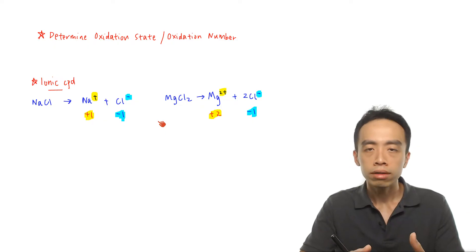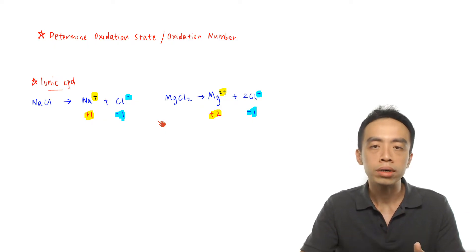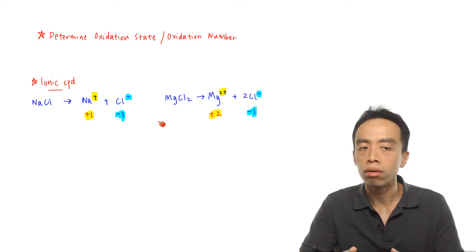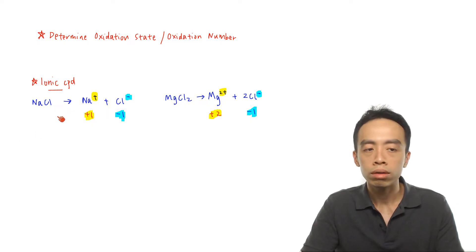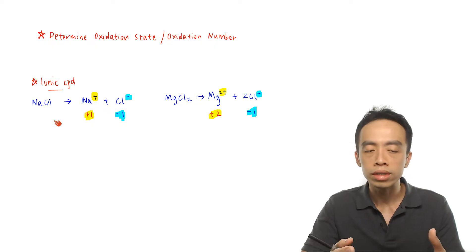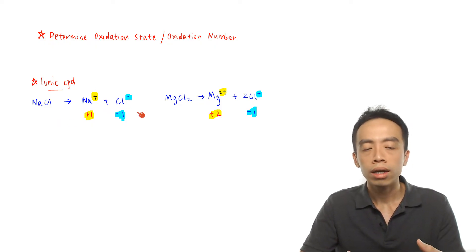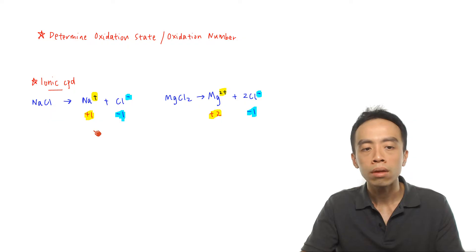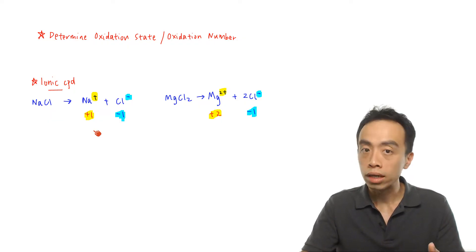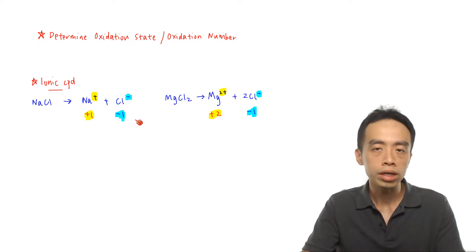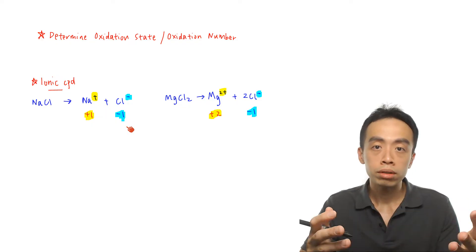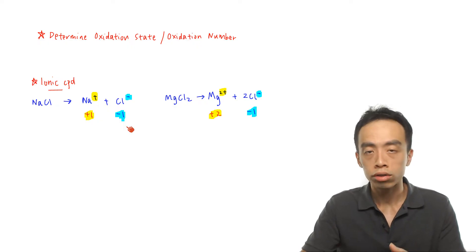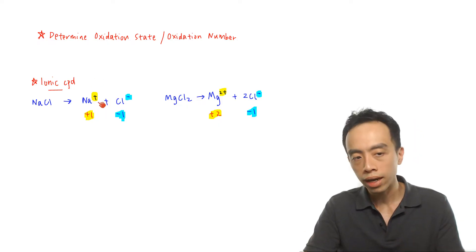For an ionic compound, the oxidation state of the element would just be the charge that the ion possesses. For sodium chloride, which is an ionic compound, it consists of Na+ ions and Cl− ions. The charge for the sodium cation is +1, so the oxidation number for sodium in sodium chloride is +1. For Cl−, the charge is −1, so the oxidation number for Cl in sodium chloride is −1. The oxidation number is simply equal to the charge.